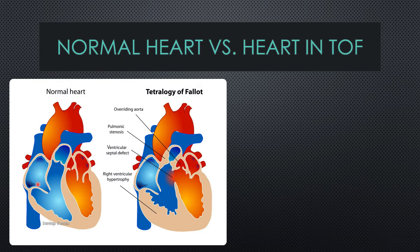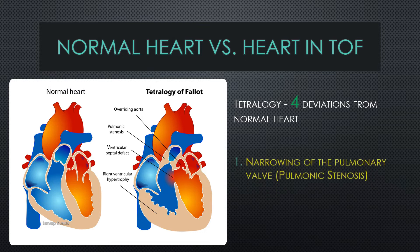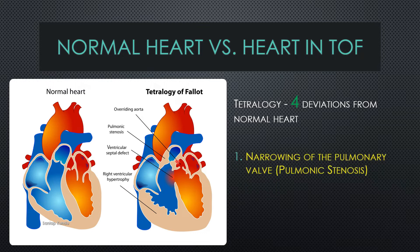In this figure you can see an image of a normal heart and an image of a heart with Tetralogy of Fallot. As the name suggests, tetralogy means four deviations from the normal heart. The first one is narrowing of the pulmonary valve, as you can see in the figure — it is also called pulmonic stenosis.